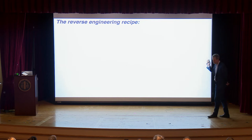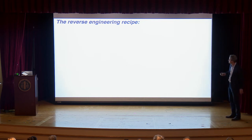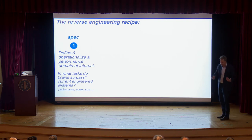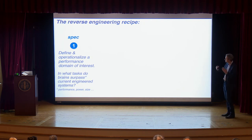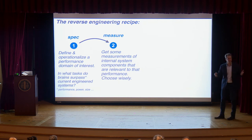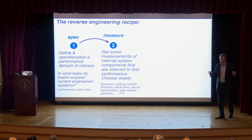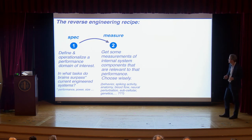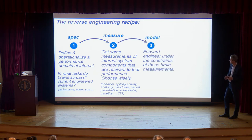So reverse engineering, more concretely: if you're going to work on a problem, you have to specify it first — operationalize a domain of interest, usually something that brains do better than machines, whether in performance, power, or size. Then you want to go and measure something in the system. You can measure behavior and spikes, anatomy, blood flow, neural perturbation, subcellular genetics — neuroscience is a big tent. You need to choose wisely to get constraints on the thing you've specified.